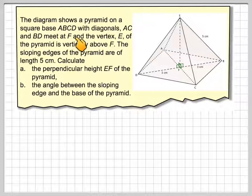The diagram shows a pyramid on a square base ABCD with diagonals AC and BD meeting at F, and the vertex E is directly above F. The sloping edges of the pyramid are 5 centimeters. These are the sloping edges.